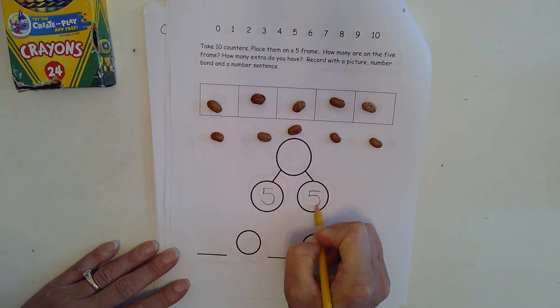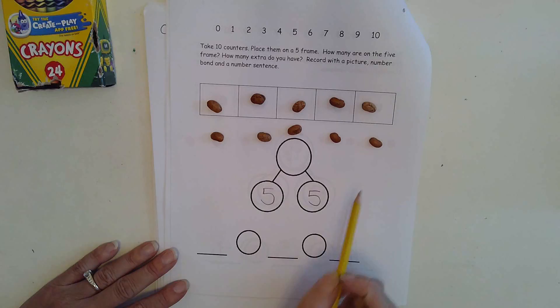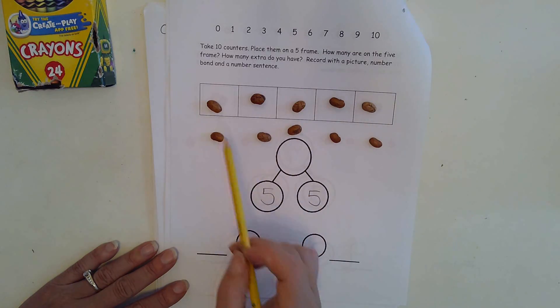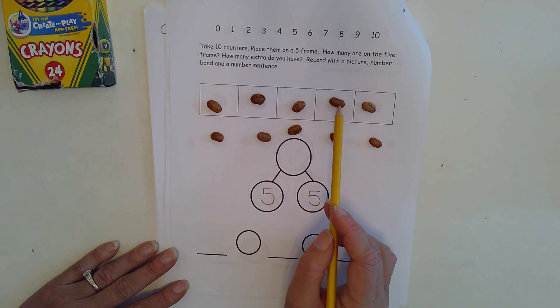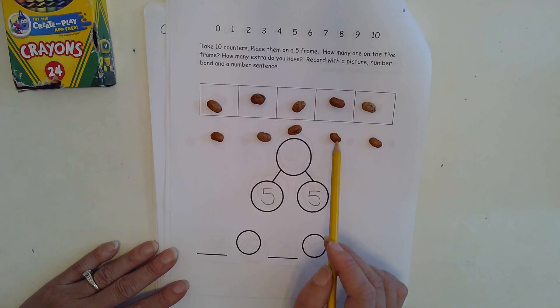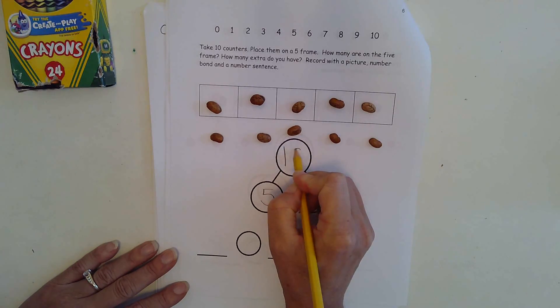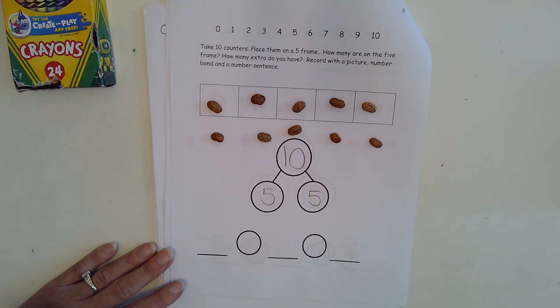So I have part in and part out, and my whole number, the number of beans I have in all is one, two, three, four, five, six, seven, eight, nine, ten. Ten is my whole number. Five and five make ten.